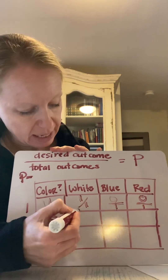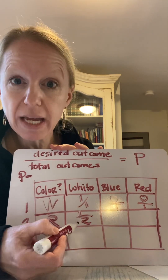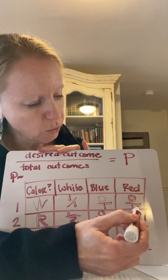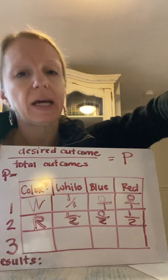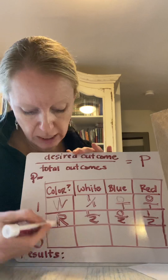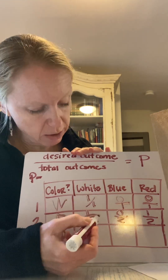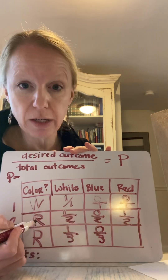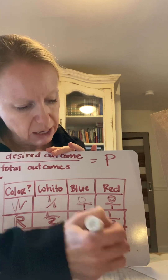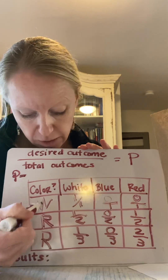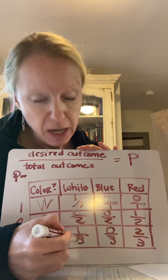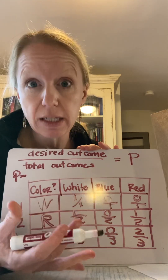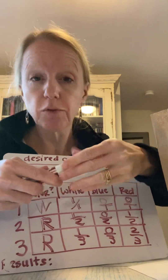If the next draw is red, I add 'R' and update: white is still one out of two tries, blue is zero out of two tries, and red is now one out of two tries. If I get another red, white stays one out of three tries, blue stays zero out of three tries, and red becomes two out of three tries. You continue each time — counting how many you've gotten of each color, with the bottom number being the total tries. This is your desired outcome over total outcomes. Keep going for 25 tries.